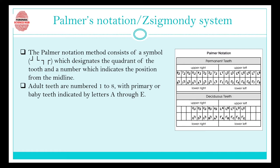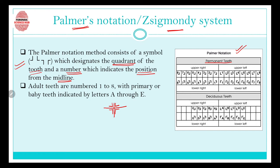Now let's talk about the second system: the Palmer notation, also known as the Sigmondi system — don't get confused, they are the same thing. The Palmer notation method consists of four symbols which designate the quadrant of the tooth, and numbers which indicate the position of the tooth from the midline. For each quadrant, a specific symbol is used.